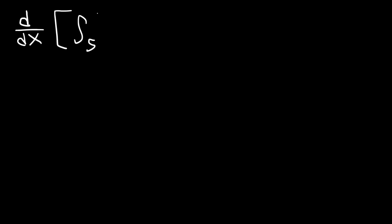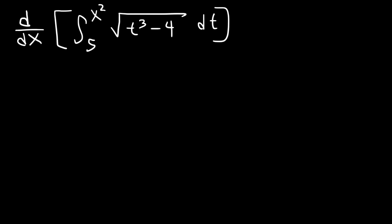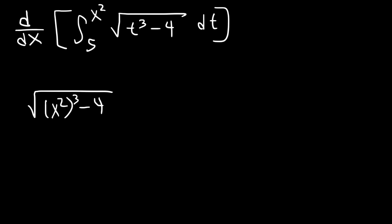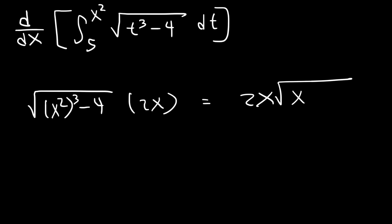Here's another example. Instead of x, let's say it's x squared. We're going to use the square root of t to the third minus 4, dt. Go ahead and try it — what do you think the answer is going to be? Here's what you need to do for the fast way: the first thing is to replace t with what you see in the limit, in this case x squared. So it's going to be x squared raised to the third power minus 4. Then you multiply by the derivative of x squared based on the chain rule, which is 2x. So the final answer is 2x times the square root of x to the sixth minus 4.